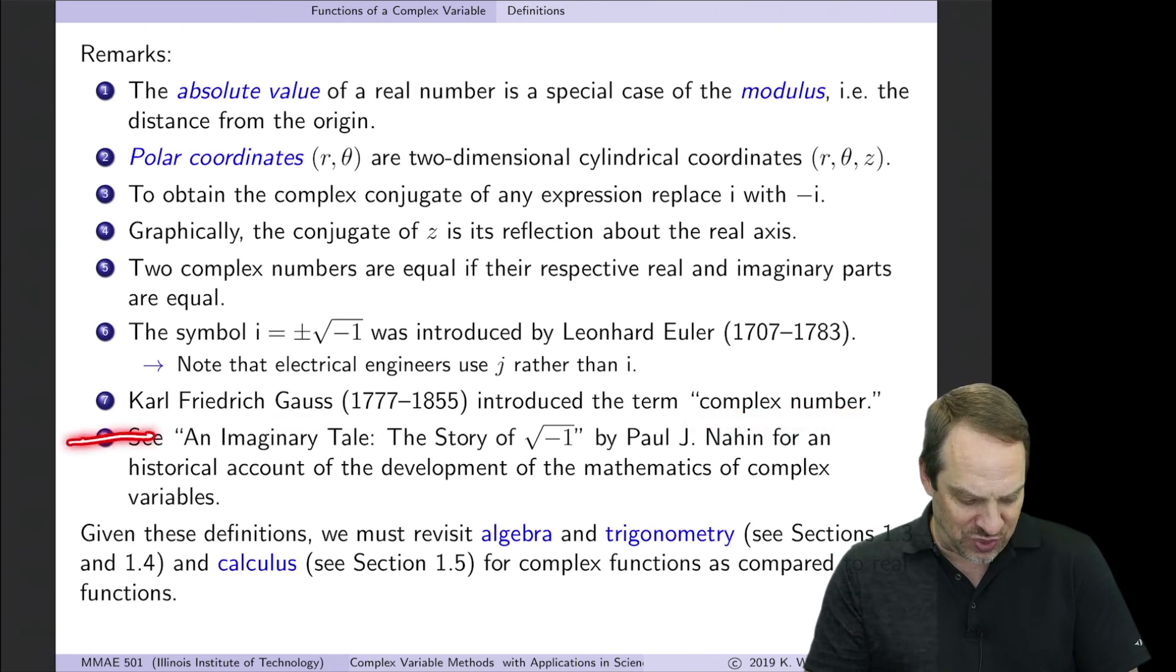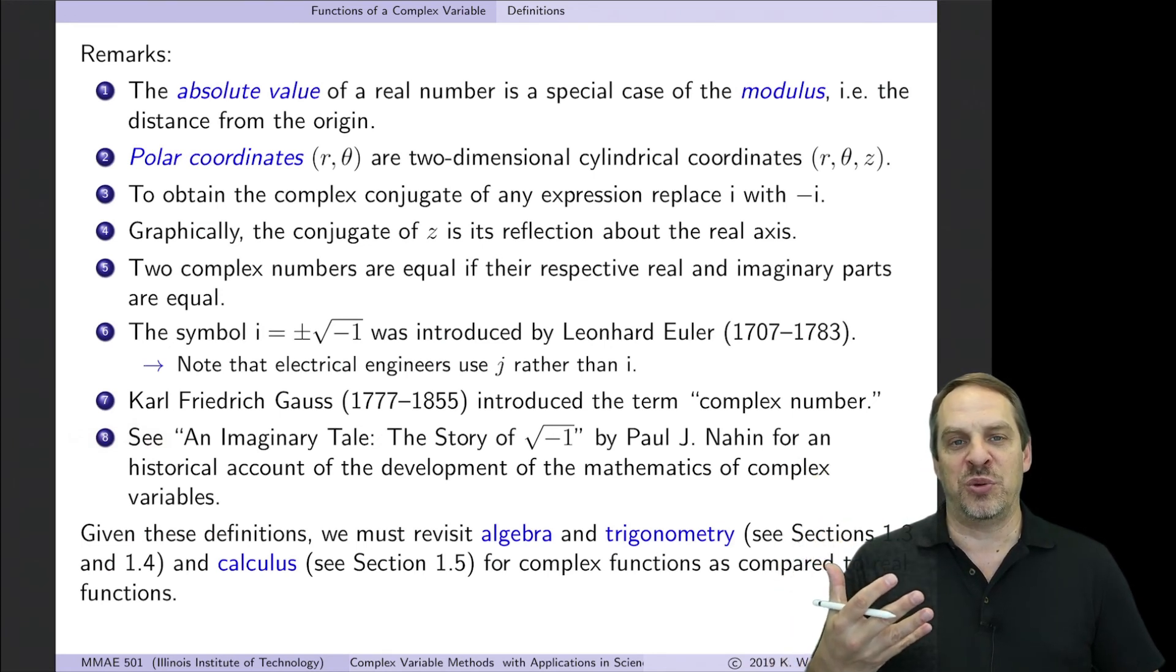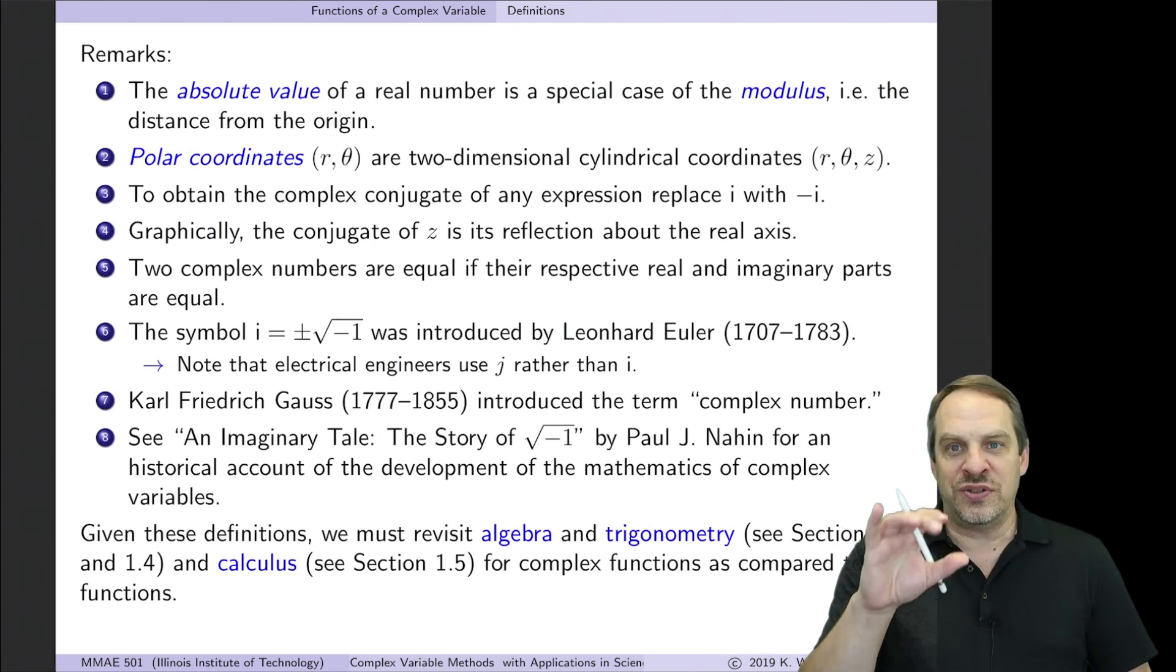There's actually a really good book as well, An Imaginary Tale, The Story of Square Root of Minus One. It gives a historical account of the development of complex variable theory, and it's unique in the sense that while it focuses primarily on the history, it also gives the math. So it gives examples and shows how it was used originally in some algebraic factorizations and how it developed into what we know today as complex variable theory.